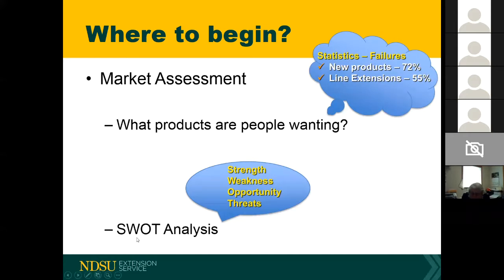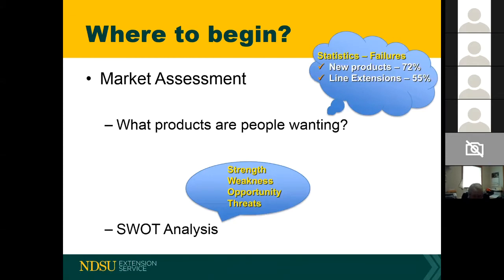The second tool for market assessment is a SWOT analysis — Strengths, Weaknesses, Opportunities, and Threats. You want a product idea with more strengths than weaknesses and more opportunities than threats. That's the general idea: you want something that has more strengths and opportunities than weaknesses and threats.